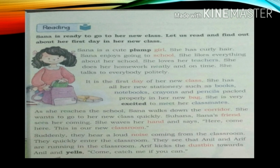As Sana reaches the school, she walks down the corridor. She wants to go to her new class quickly because she is very excited to meet her friends. Sohana, who is Sana's friend, sees her coming, waves her hand and says, 'Here, come here! This is our new class.' Sohana, who had already reached the new class, waves and directs Sana to come in. Suddenly something strange happens — they hear a loud noise coming from the classroom.